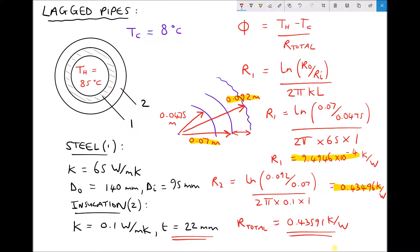So now that we have our total, let's remove our sketch to create some space. And then we'll calculate the rate of heat transfer per meter of length of this pipe. Our rate of heat transfer is the hot temperature of 85 minus the cold temperature of 8 divided by the total thermal resistance of 0.43591. And that gives us a rate of heat transfer equal to 176.6 watts per meter.